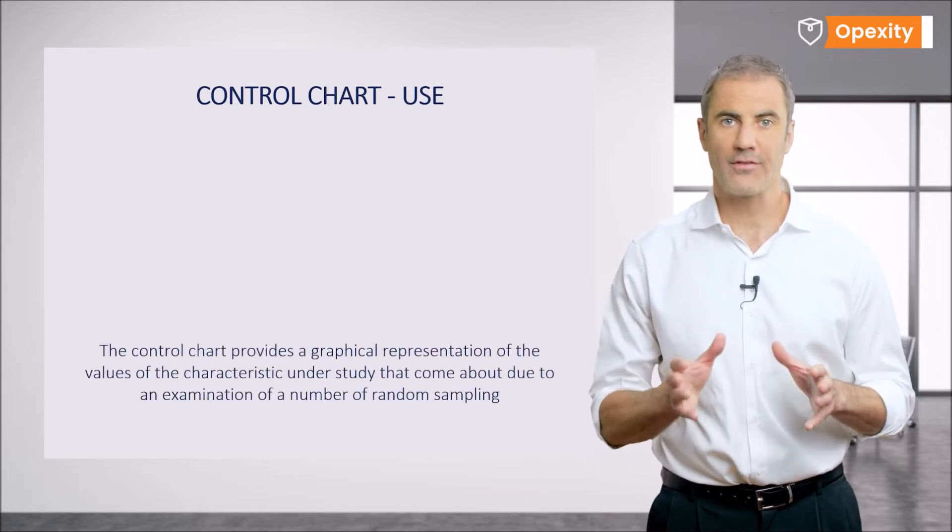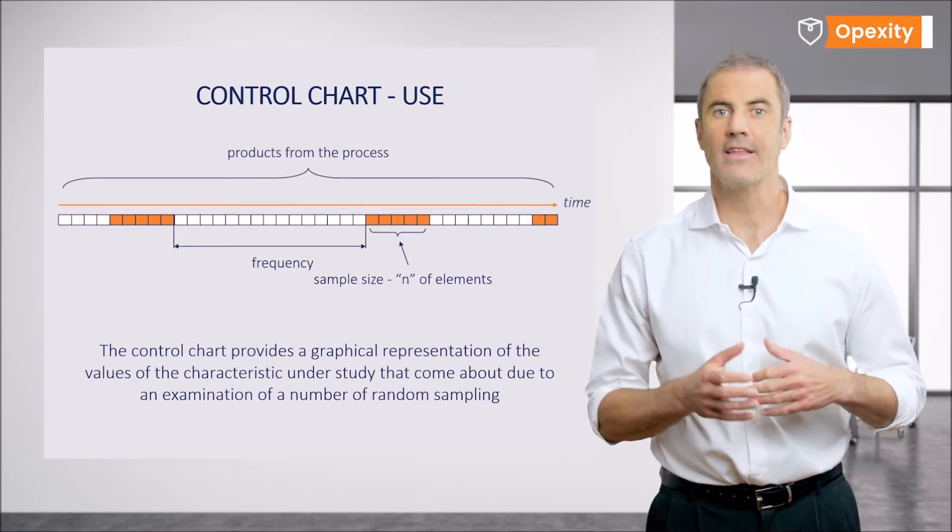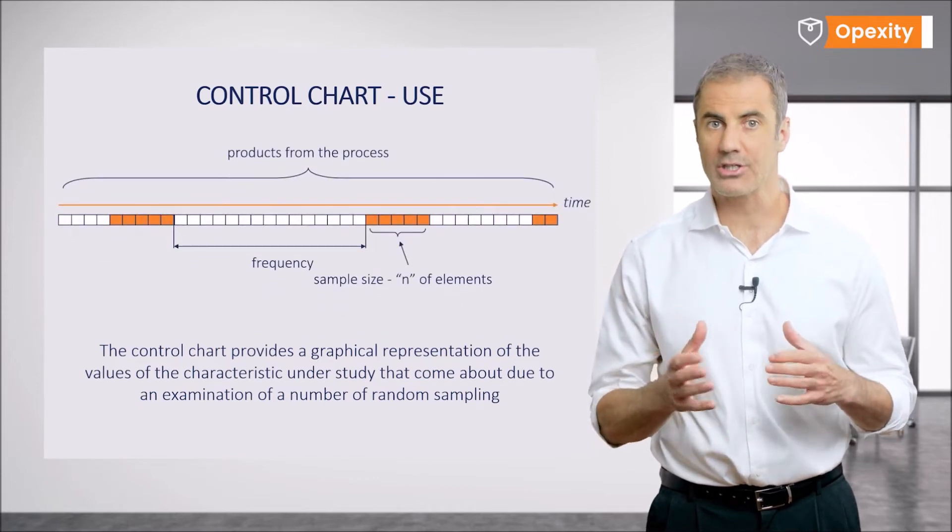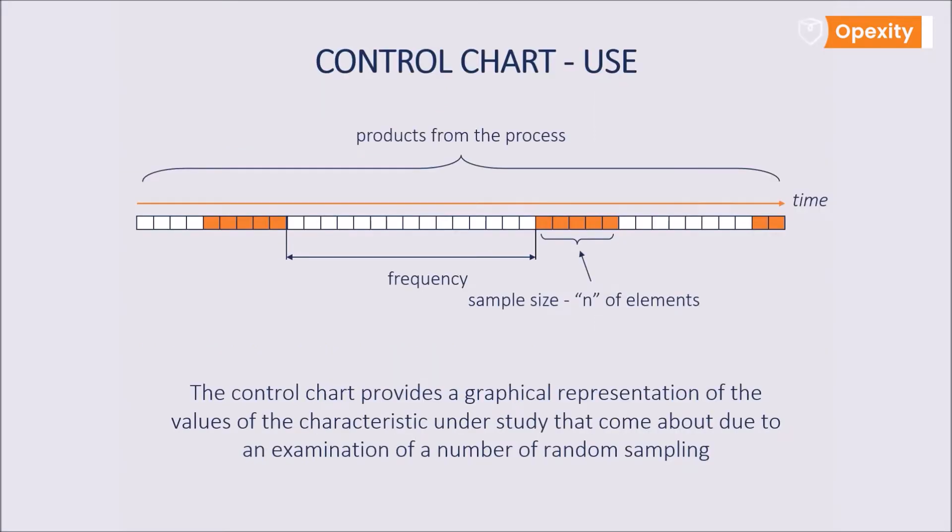The chart allows for a graphical representation of the values of the characteristic under study that come about due to an examination of random sampling. The main parameters in effect while recording any control chart are sampling frequency, time intervals or how many products we take, and the sample size n, the number of products taken from the process and used to measure a given characteristic.